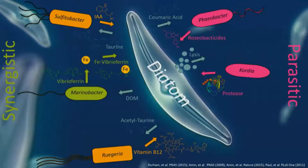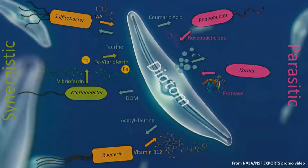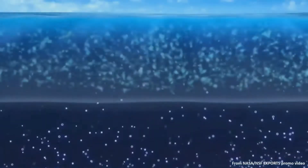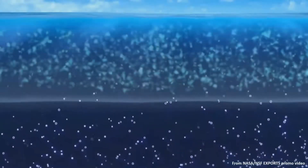But also on the more parasitic side, where some of the microbes produce proteases to actually digest the diatom and kind of eat it alive. And I think it's particularly important and interesting to think about this also at a larger scale — how those microbial communities actually influence the entire planet.